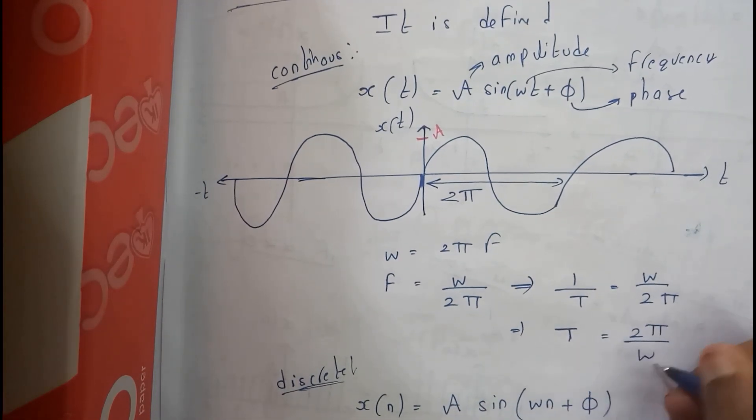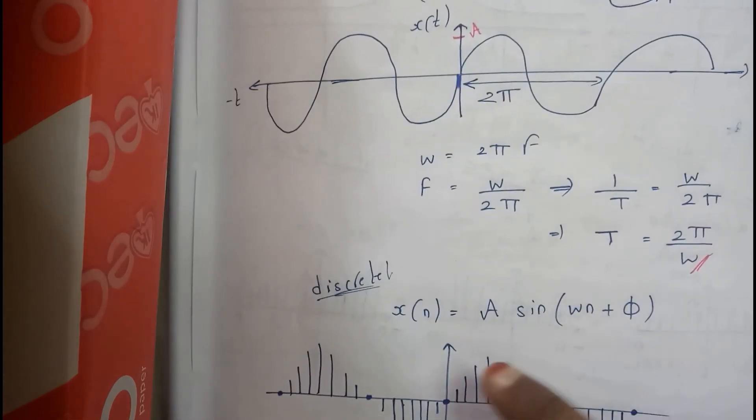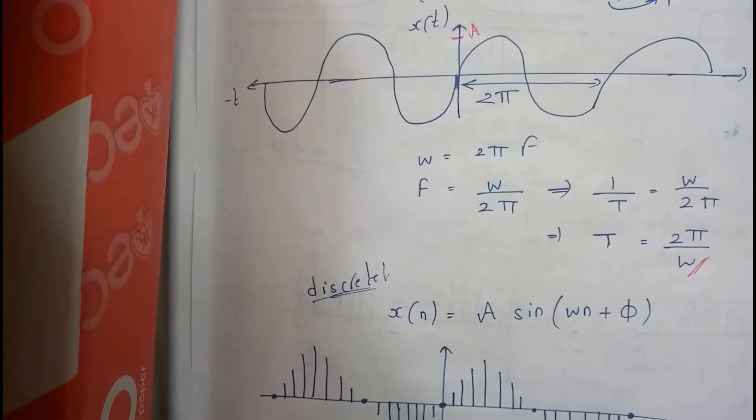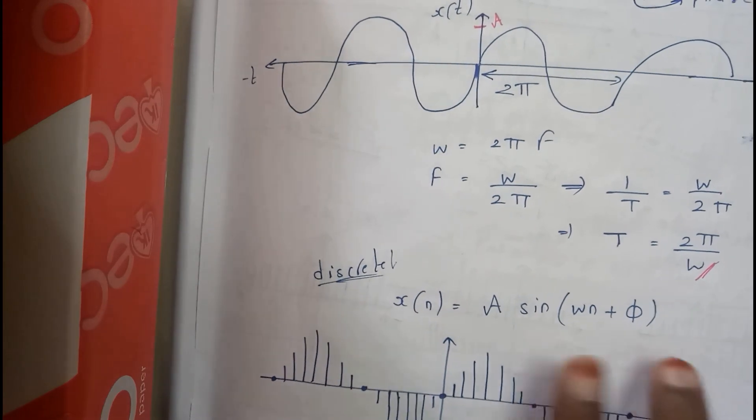So this is what we can prove guys from this continuous signal of sinusoidal signal and even the discrete signal. Just place in place of t, n. That's it. x of n equals A sin omega n plus phi.